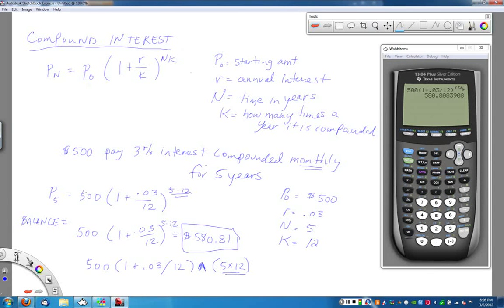So in this case, I need both the 5 and the 12 to be in the exponent. So I need to put that 5 times 12 in parentheses like this. Do all of that out, I get 580.81.